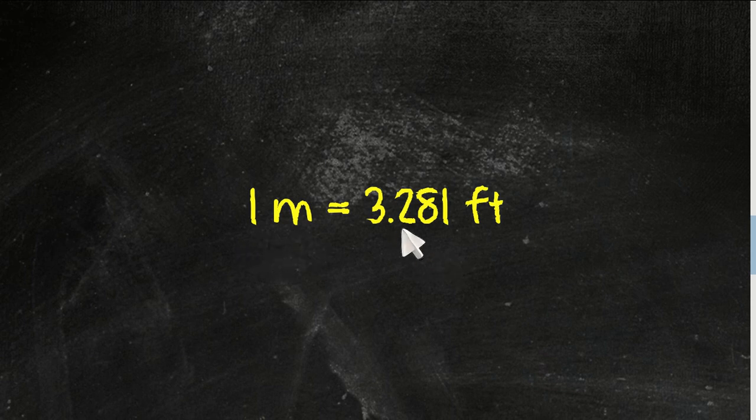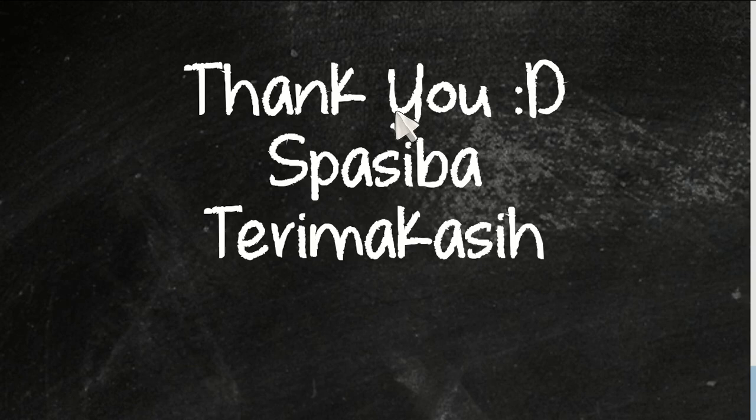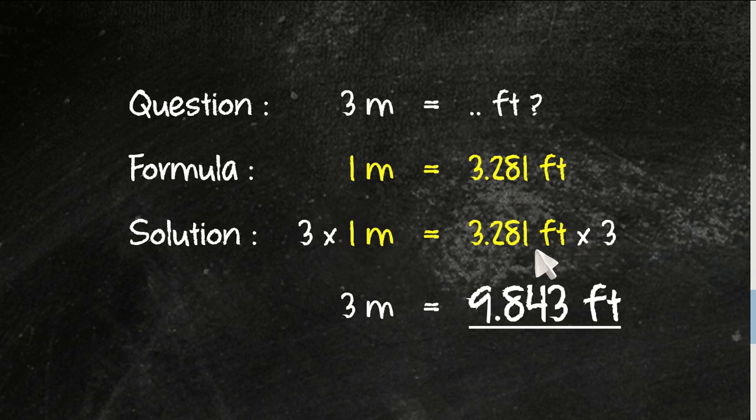1 meter equals 3.281 feet. This is the answer section. First, just write the question again, and then you write the formula again. This is how you solve the problem.